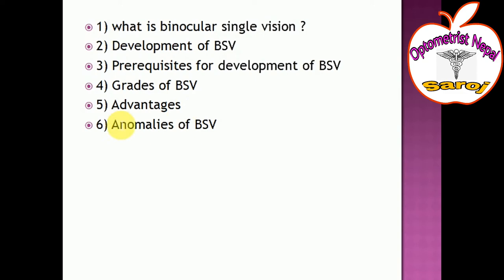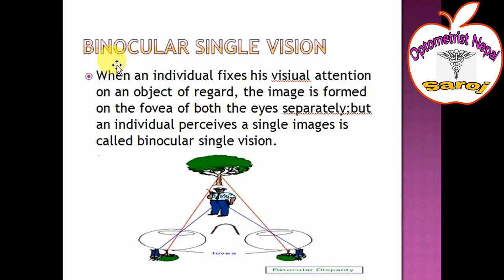What is binocular single vision? When an individual fixes his visual attention on an object of regard, the image is formed on the fovea of both eyes separately, but the individual perceives a single image — this is called binocular single vision.